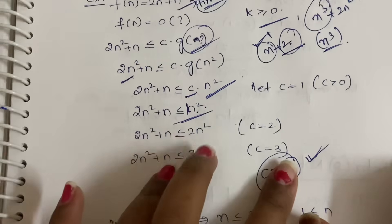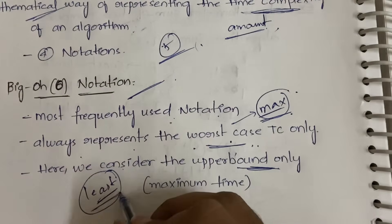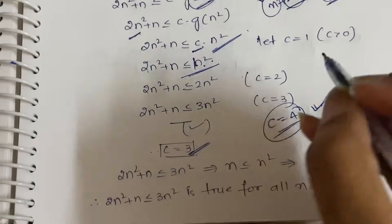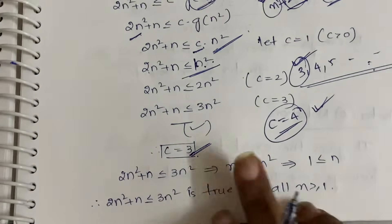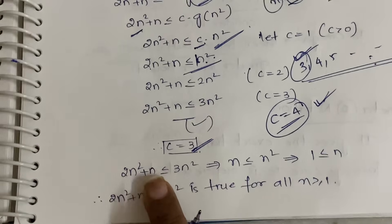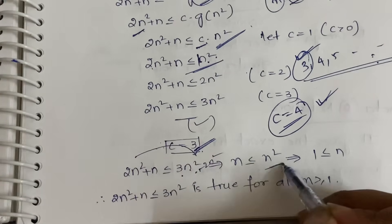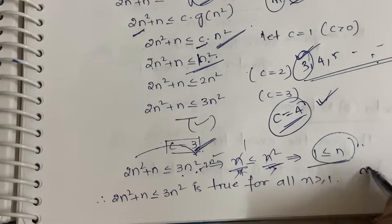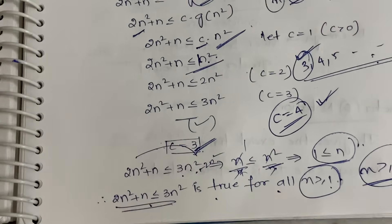We could also take c = 4, but we said we consider the least upper bound for Big O. The upper bound values start from 3 (i.e., 3, 4, 5, ...) and the least among these is 3, so c = 3. Substituting: 2n² + n ≤ 3n², which gives n² ≥ n, or n ≥ 1. This condition holds for all n ≥ 1.